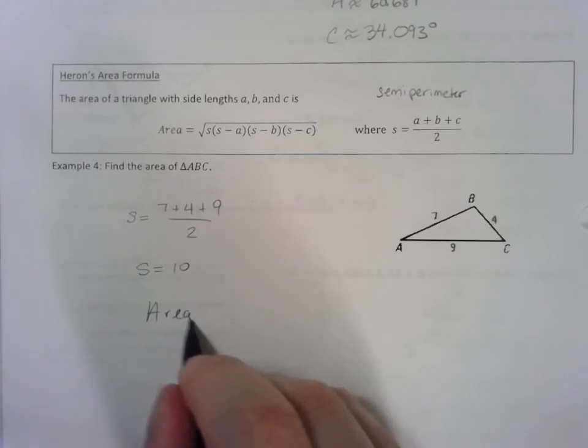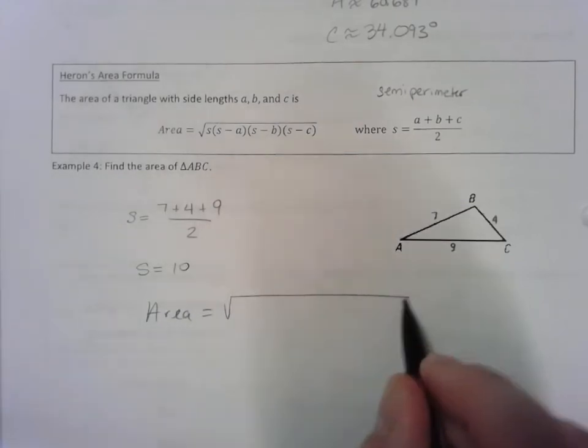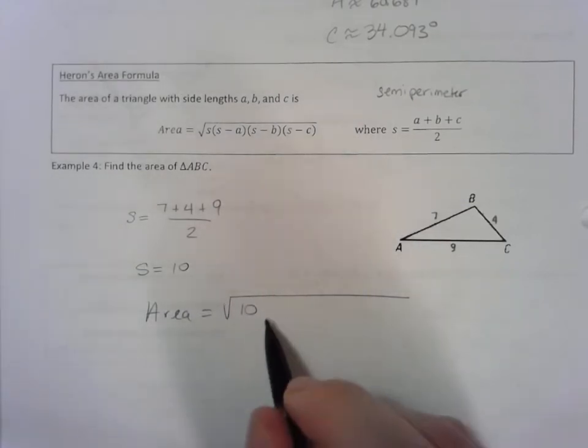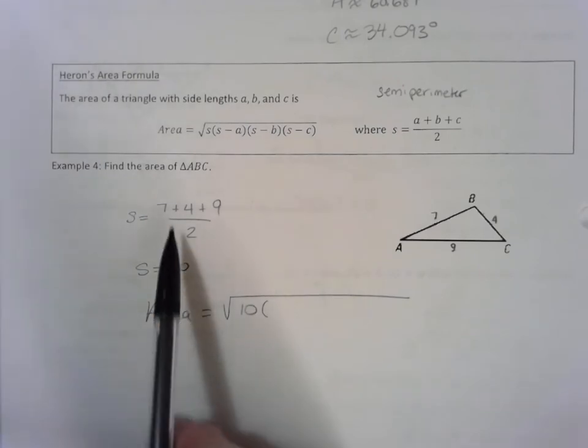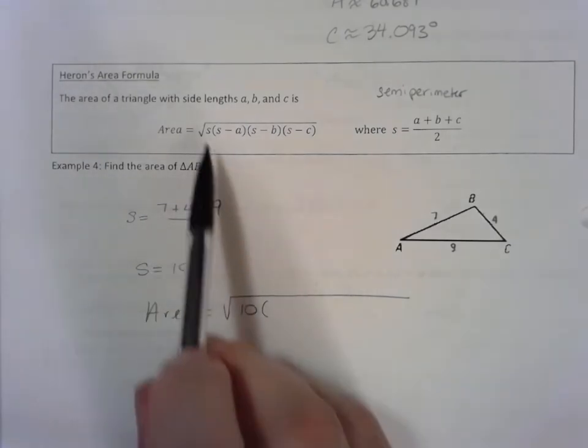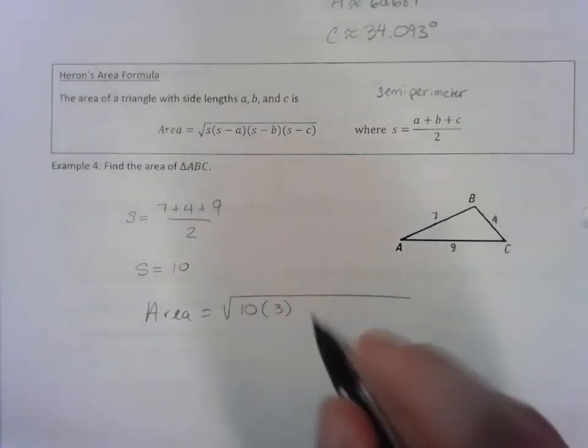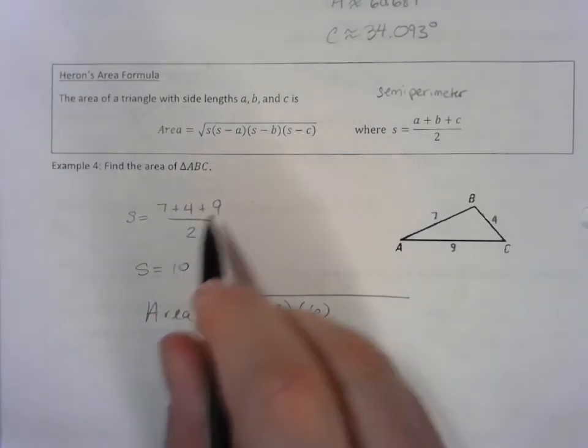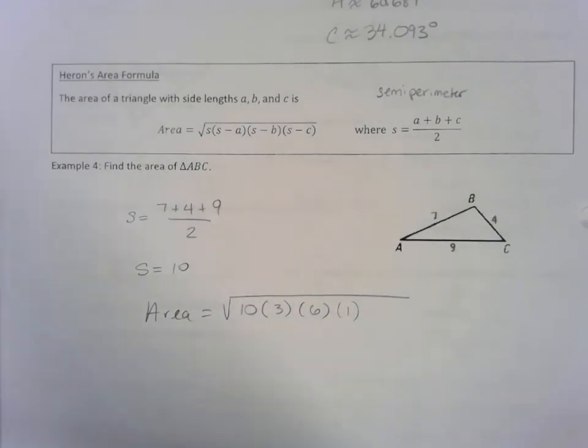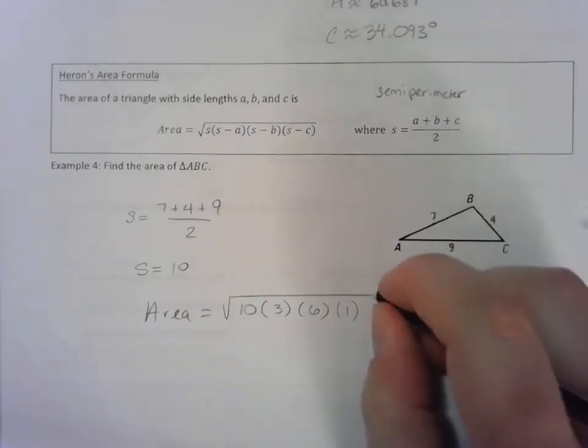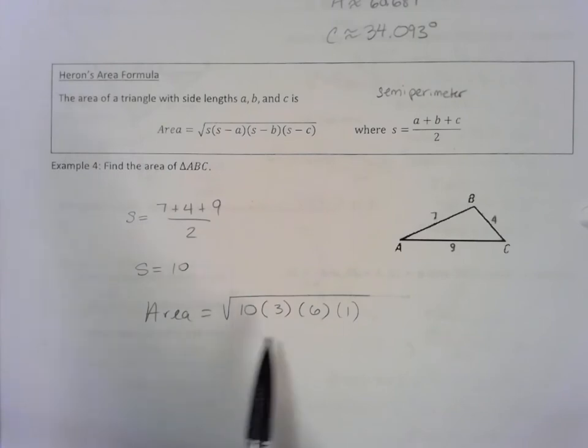Now the area of this triangle would be the square root of 10, the semi-perimeter, and then 10 minus each of these side lengths. What's 10 minus 7? 3. What's 10 minus 4? 6. What's 10 minus 9? 1. So we're going to evaluate this. I got 18 times 1 is 18, times 10 is 180.